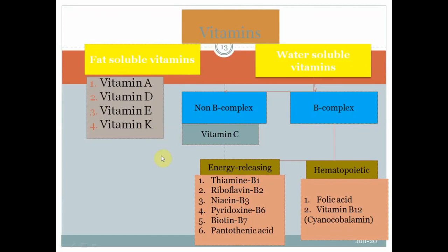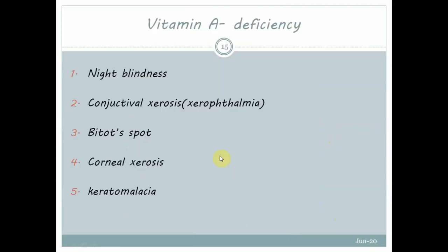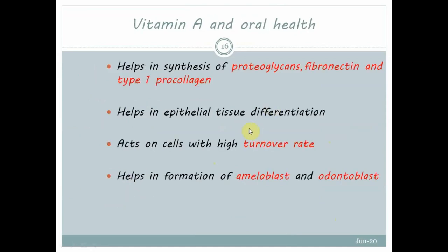Vitamins are classified as fat-soluble — A, D, E, K — and water-soluble — B complex and C. The B-complex includes B1, B2, B3, B6, B7, pantothenic acid, B9 and B12 (cyanocobalamin). Vitamin A sources include meat and dairy products; beta-carotene is a precursor. Deficiencies include night blindness, conjunctival xerosis, Bitot's spots, corneal xerosis and keratomalacia.